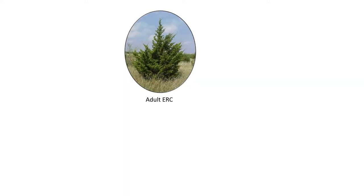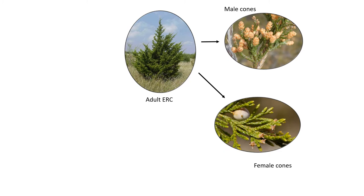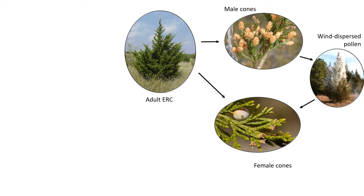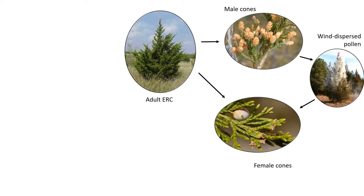Before we can start talking about the true dispersal of the eastern red cedar, we have to take a look at the life cycle. This species is dioecious, which is just a fancy word meaning that there are male trees and female trees. The male trees produce cones at the top and the female cones produce these small structures at the bottom. Inside the male cones there's pollen, and as the wind blows the pollen is carried to find female cones.